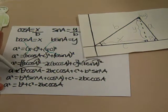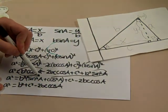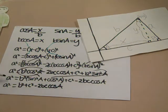Next, we factor out B squared, yielding A squared equals B squared sine squared A plus cosine squared A plus C squared minus 2BC cosine A.